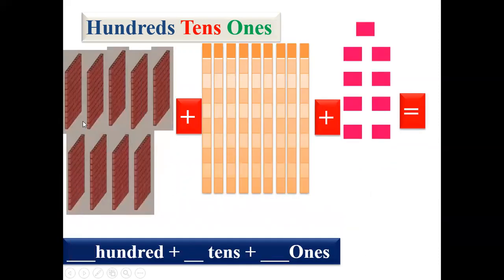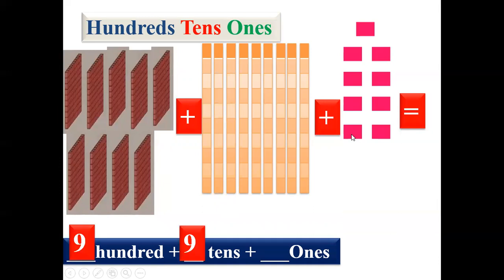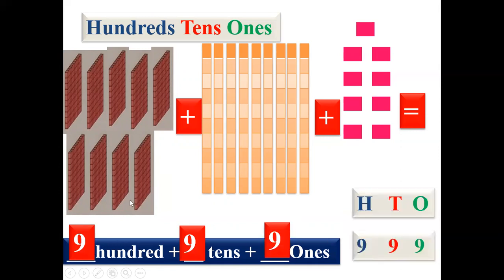Another one: count — one, two, three, four, five, six, seven, eight, nine — nine hundreds. Now count the columns for tens: one, two, three, four, five, six, seven, eight, nine — nine tens. And how many ones? Count: one, two, three, four, five, six, seven, eight, nine — nine ones. So we'll write nine in hundreds, nine in tens and nine in ones — that is nine hundred and ninety-nine.